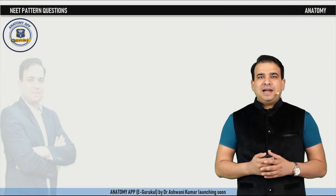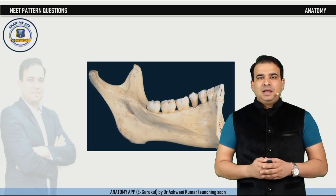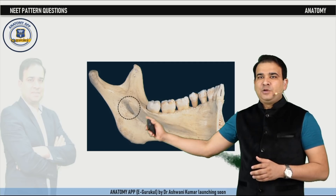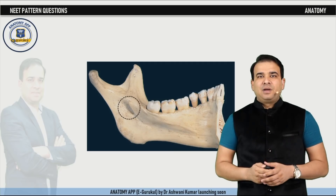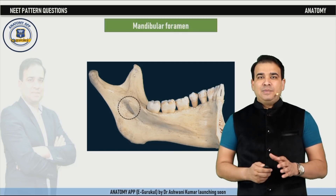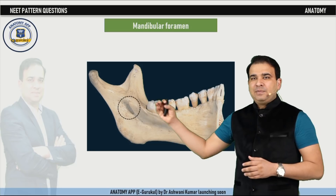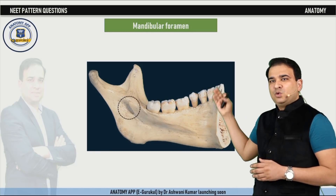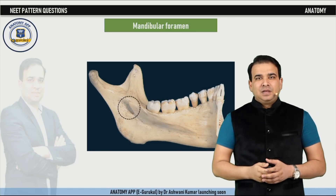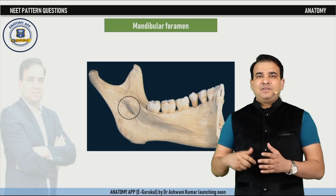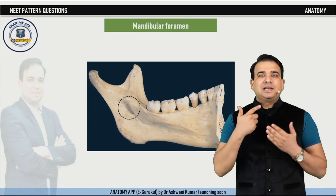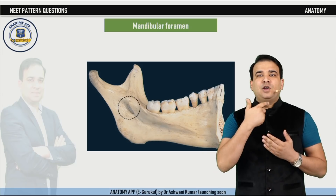Hello everyone. The first slide I'm showing you here is the medial surface of the mandible. On the medial surface of the ramus of mandible, you can appreciate a foramen — the mandibular foramen. This mandibular foramen, via the mandibular canal, leads outside as a mental foramen. So the nerves and vessels entering inside will also emerge out as the mental nerve and vessels, supplying the skin of the chin region.